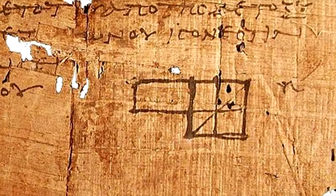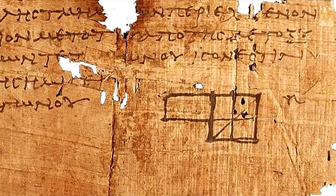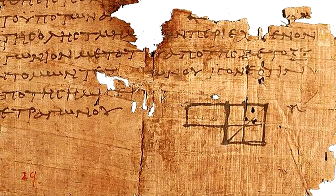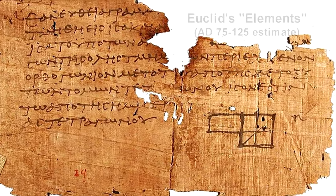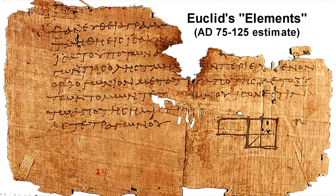Euclid lived in the Greek city of Alexandria in Egypt around 2,300 years ago. He spent his life studying and teaching geometry. He published his ideas in a book called Elements.